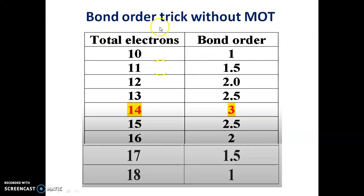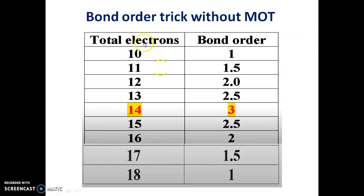We can find out bond order without using full MO theory — using a trick. If a species contains 14 electrons, the bond order is 3. This is the baseline for the trick: 14 electrons gives bond order 3.